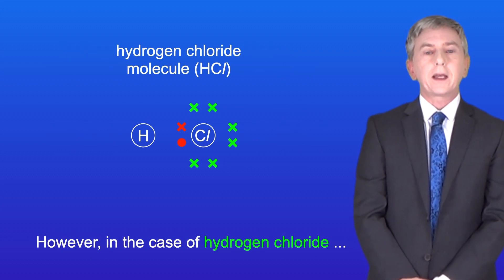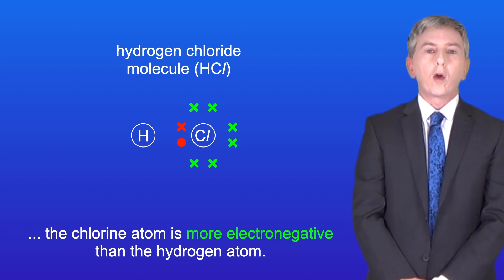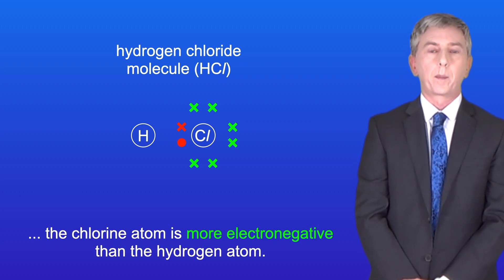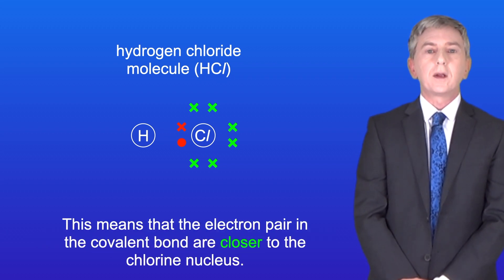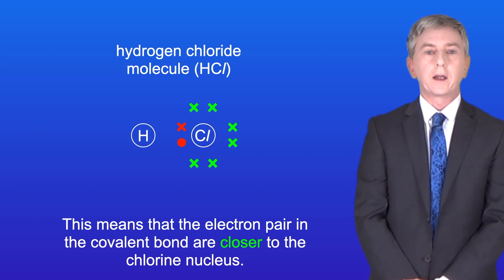However, in the case of hydrogen chloride, the chlorine atom is more electronegative than the hydrogen atom, so the electron pair in the covalent bond is closer to the chlorine nucleus.